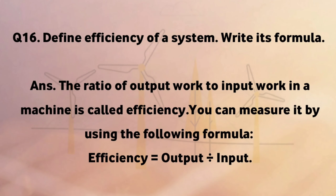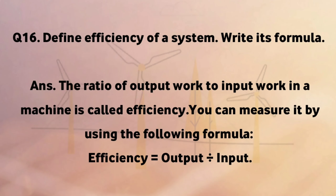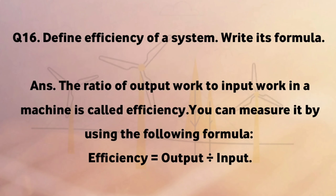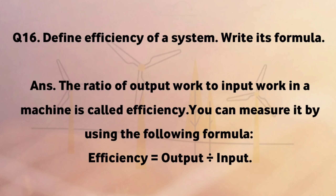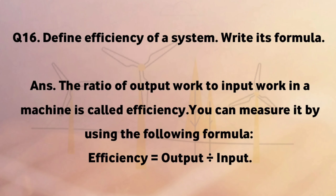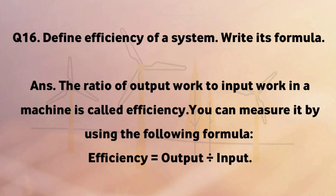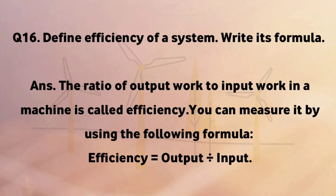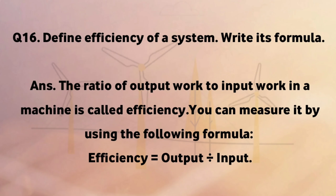Define efficiency of a system and write its formula. The ratio of output work to input work in a machine is called efficiency. You can measure it using the following formula: Efficiency equals output divided by input.